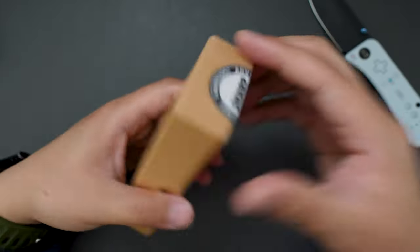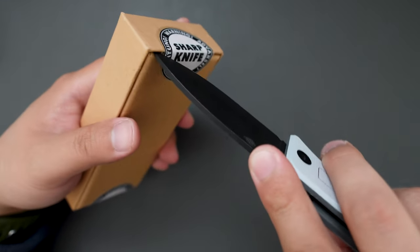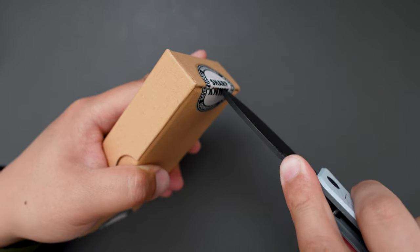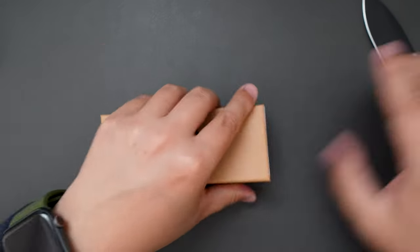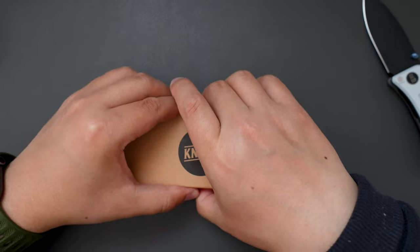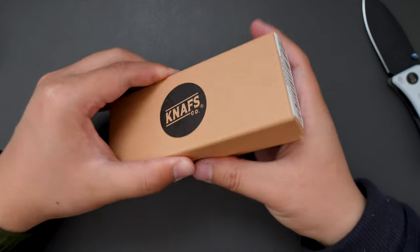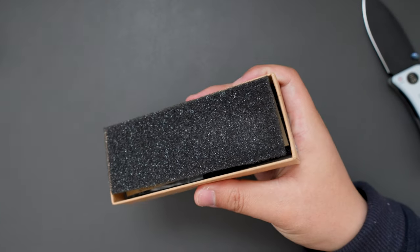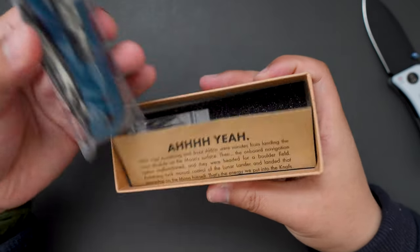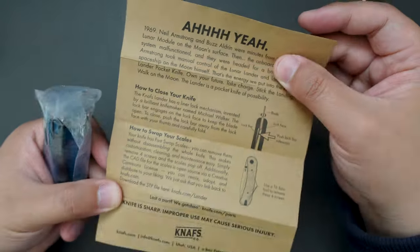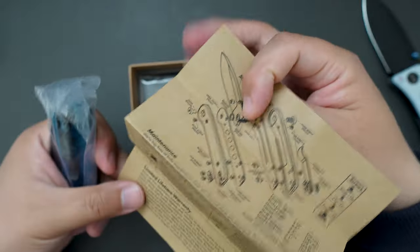Let's cut this open and see what's inside this box. Here is a knife. Looks like we got some paperwork.